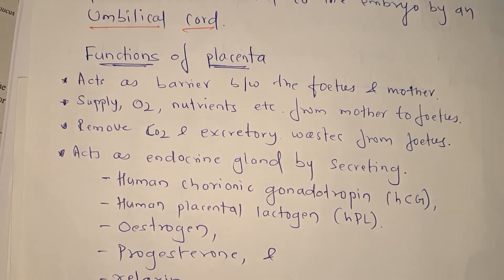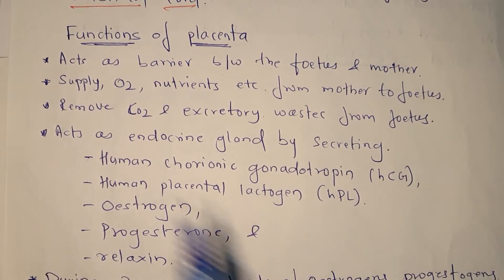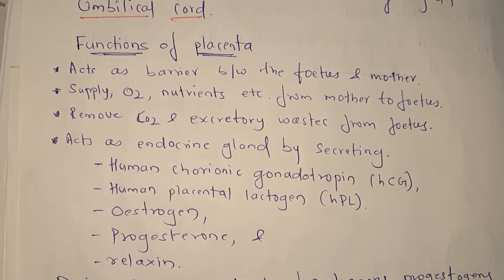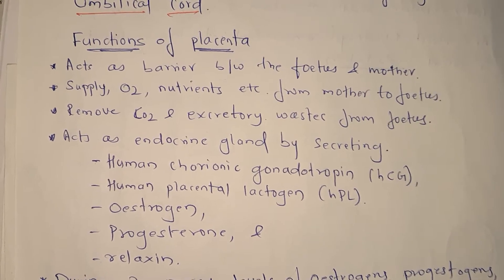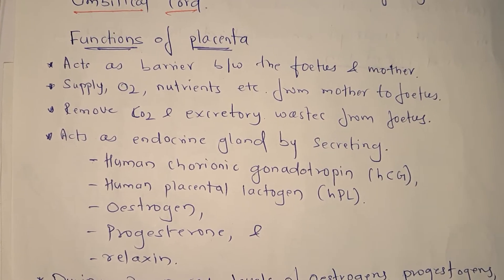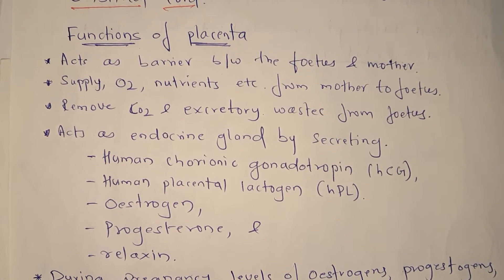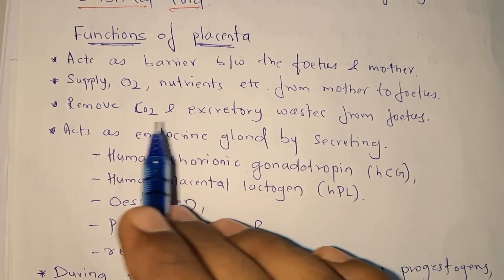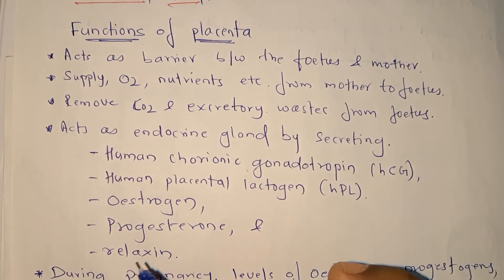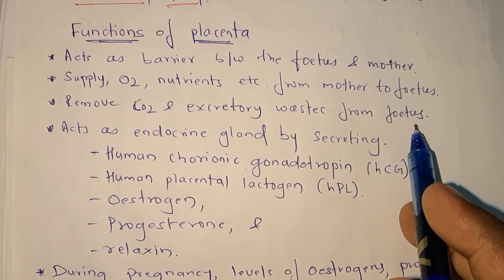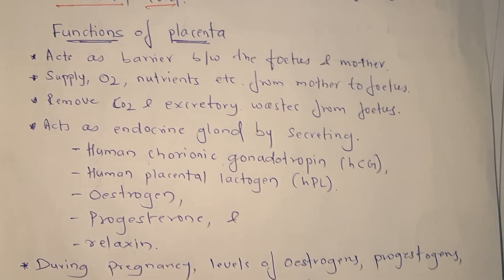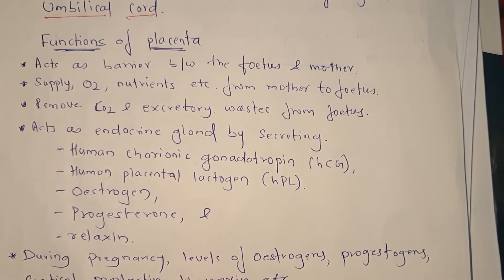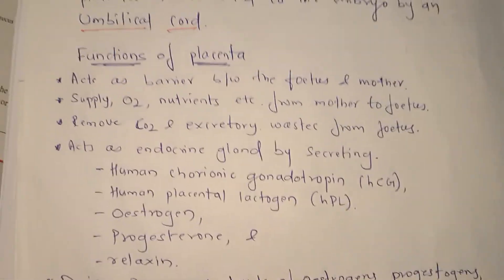Since the baby is alive and growing, it produces carbon dioxide and excretory waste — just as we studied in first year, living things produce carbon dioxide and excretory waste. When the baby is being formed, carbon dioxide and excretory products are continuously produced, and those are removed from the fetus by the placenta. So placenta supplies nutrients and oxygen to the fetus, and also removes excretory waste and carbon dioxide from the fetus.